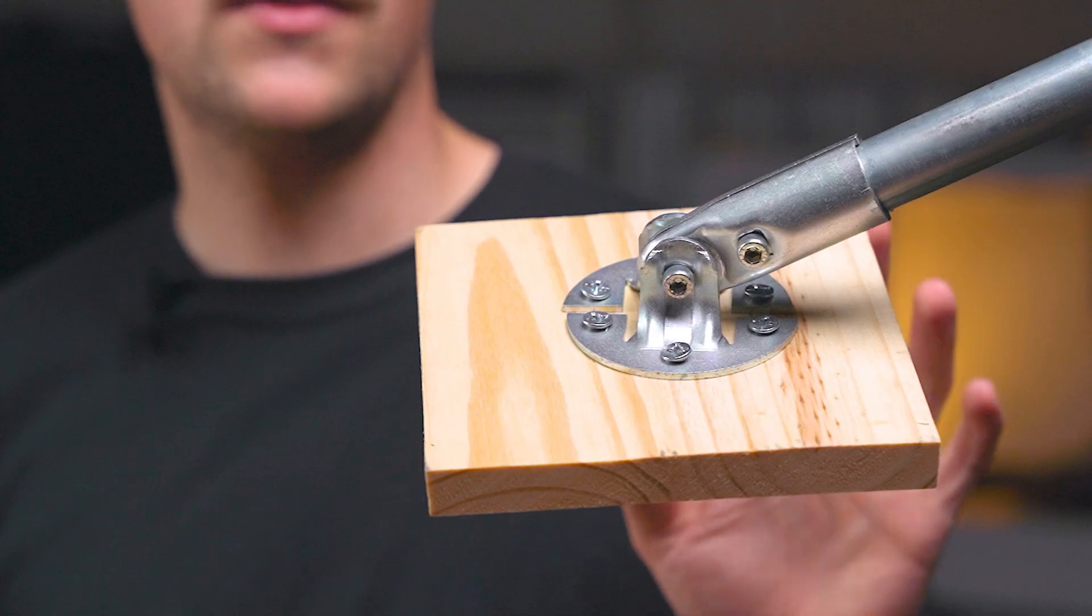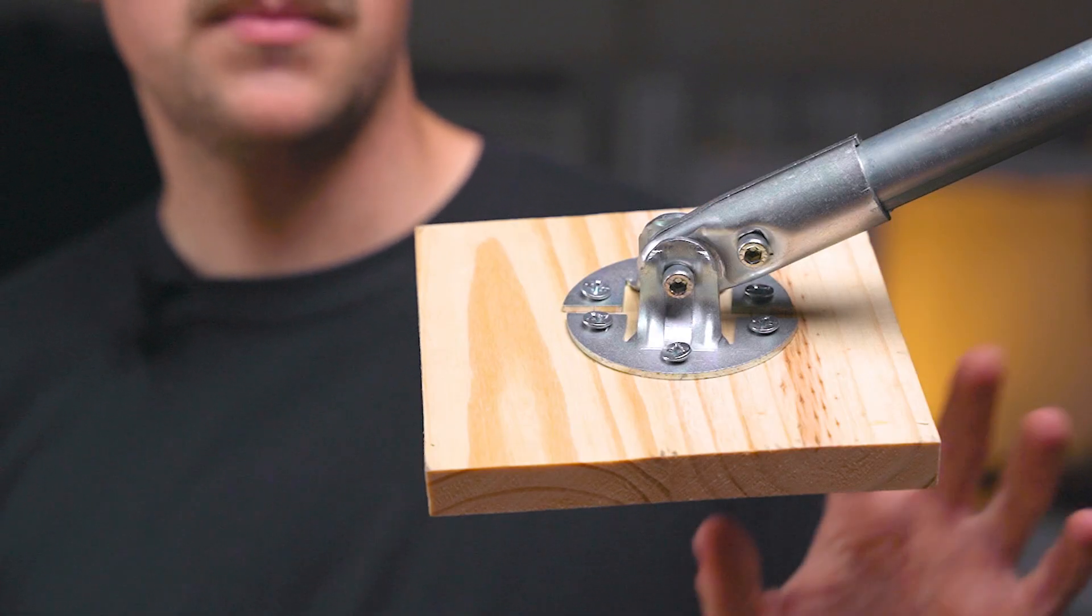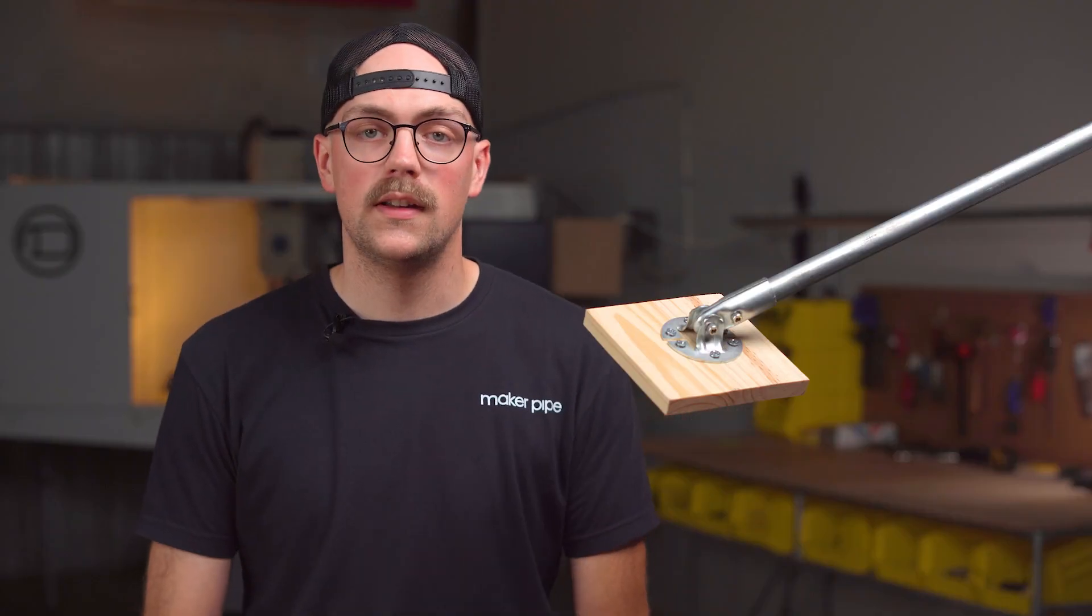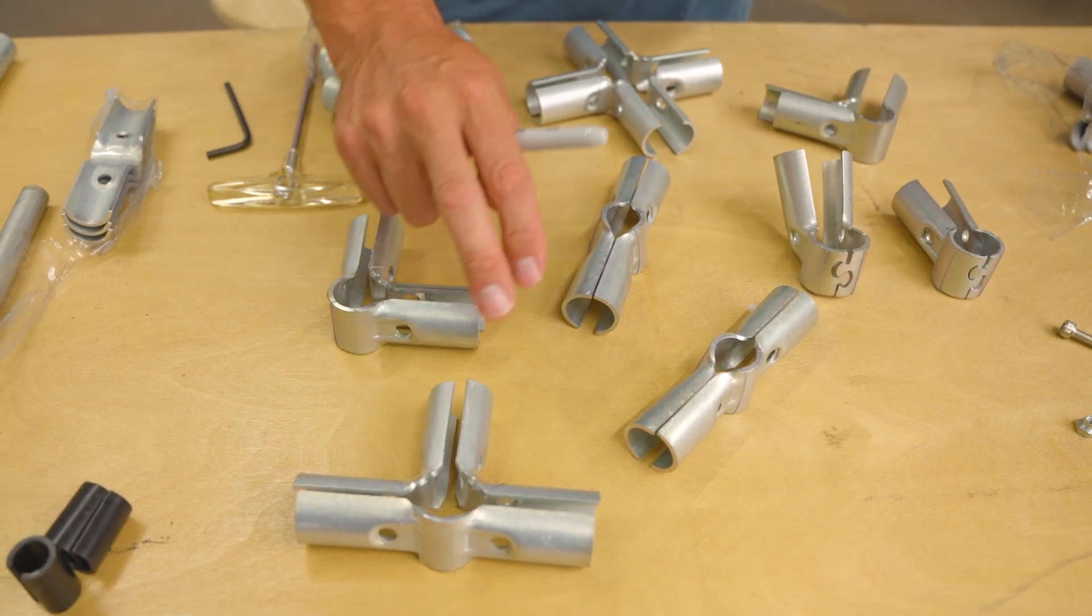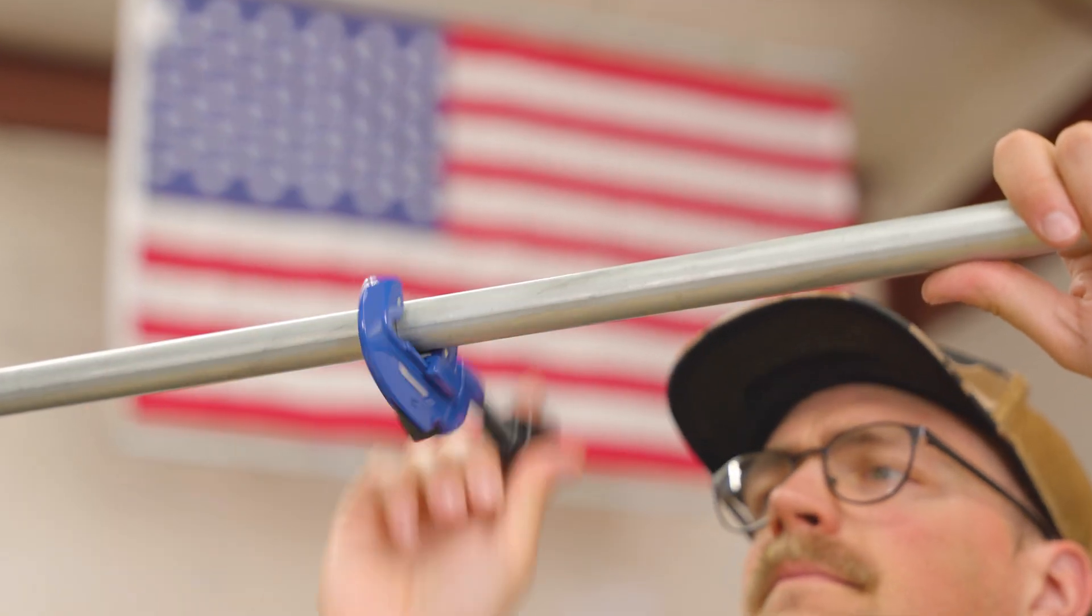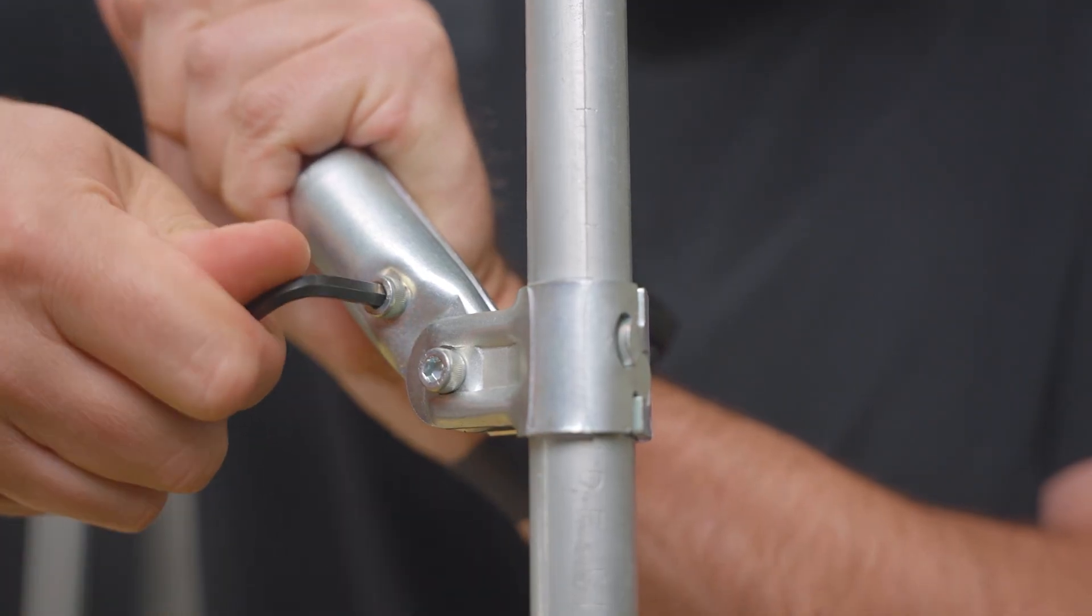Hi there, my name is Jake and this is the adjustable angle flange from Maker Pipe. This specific clamp is part of a much larger building system of connectors that let you transform ordinary off-the-shelf electrical conduit into a building material with endless potential.